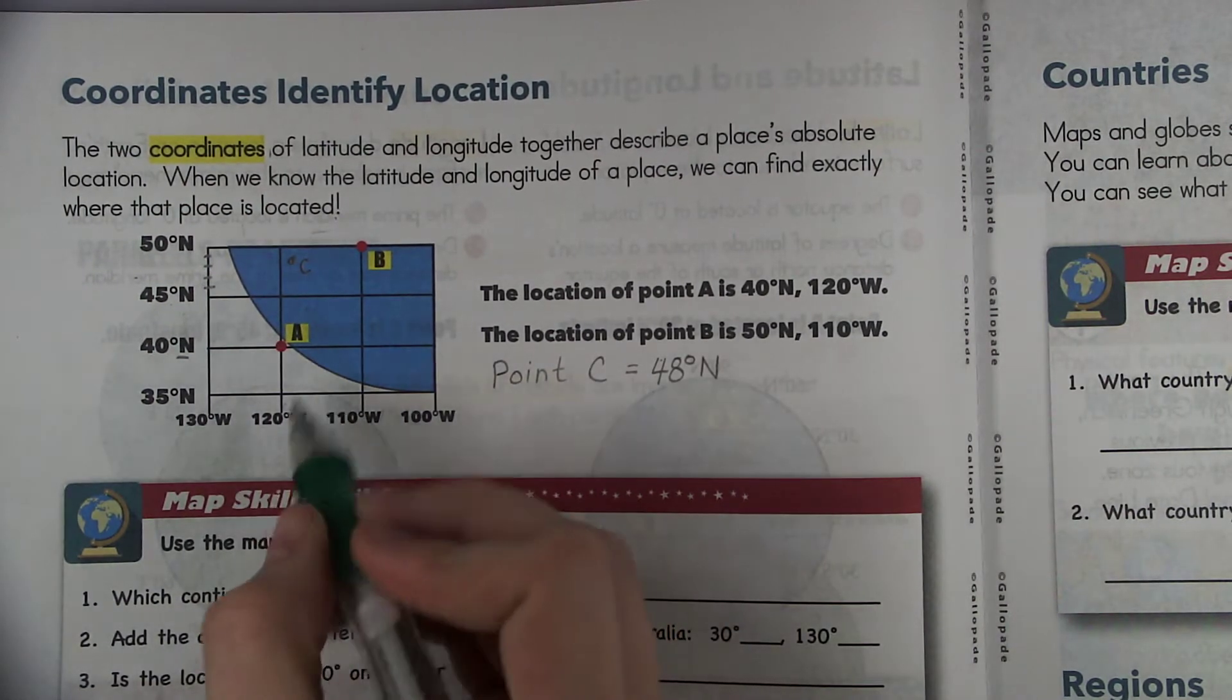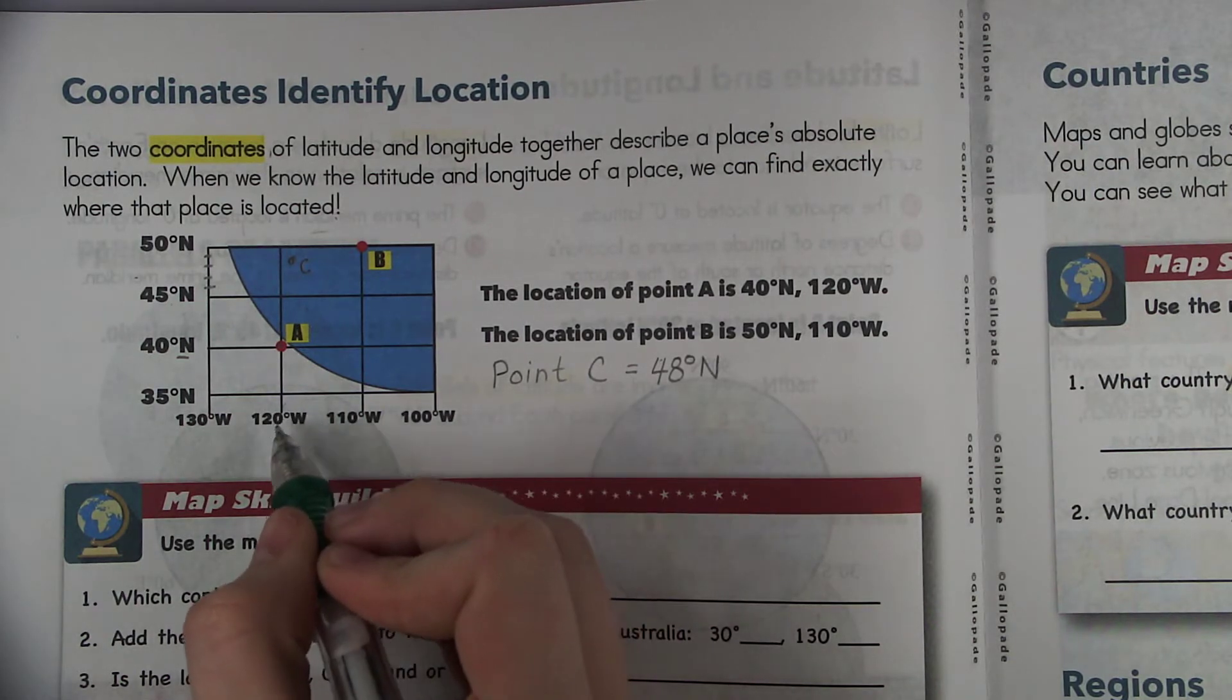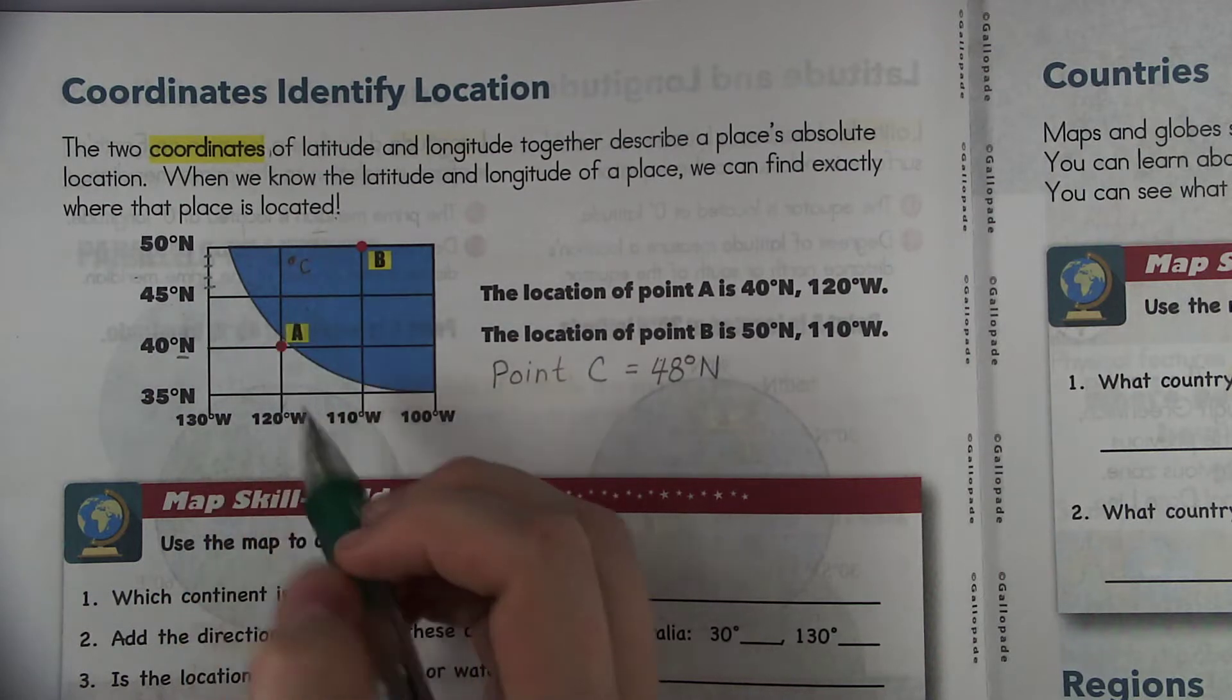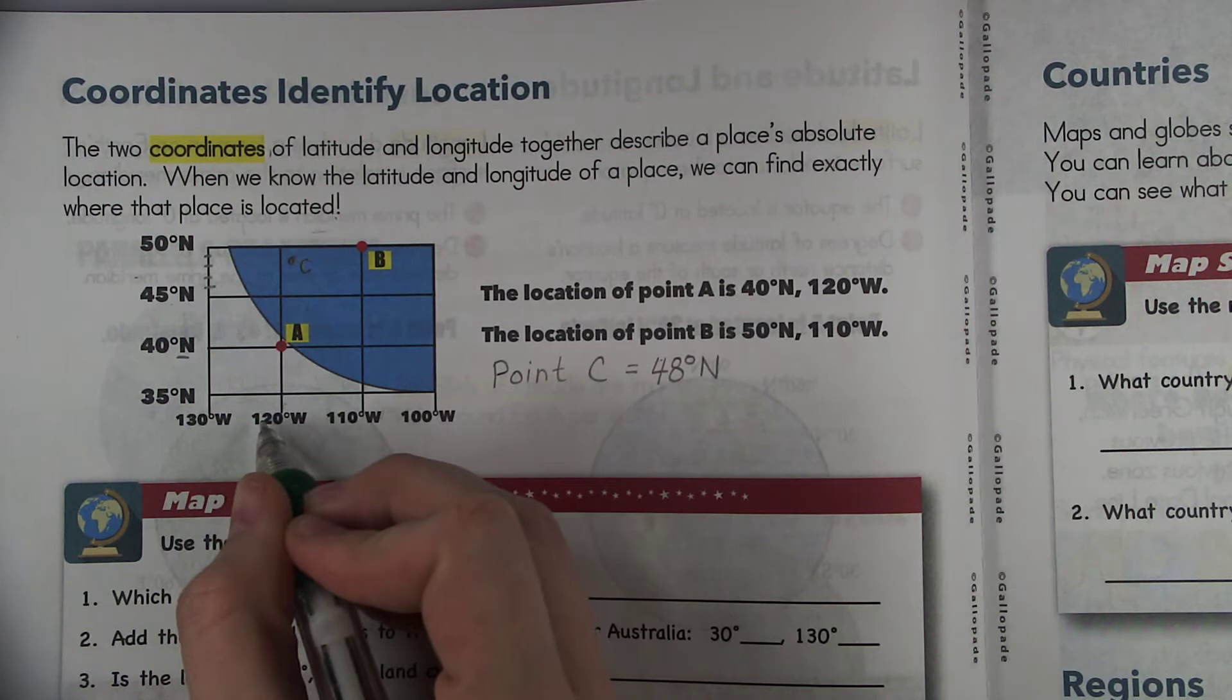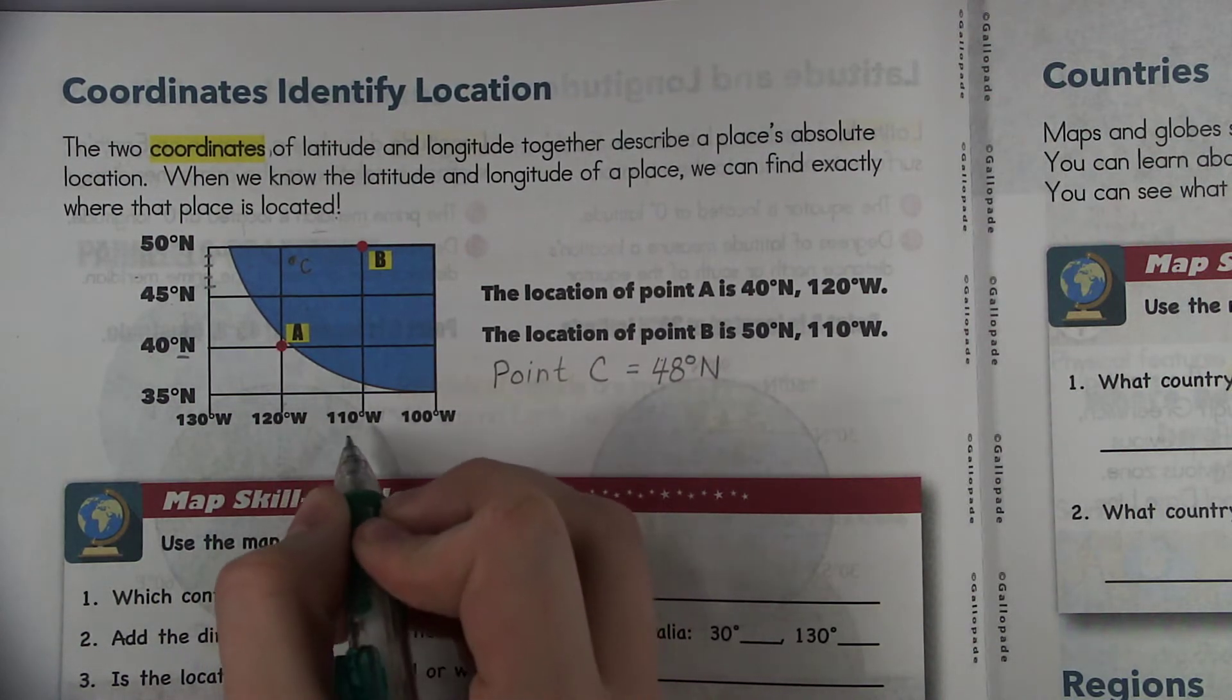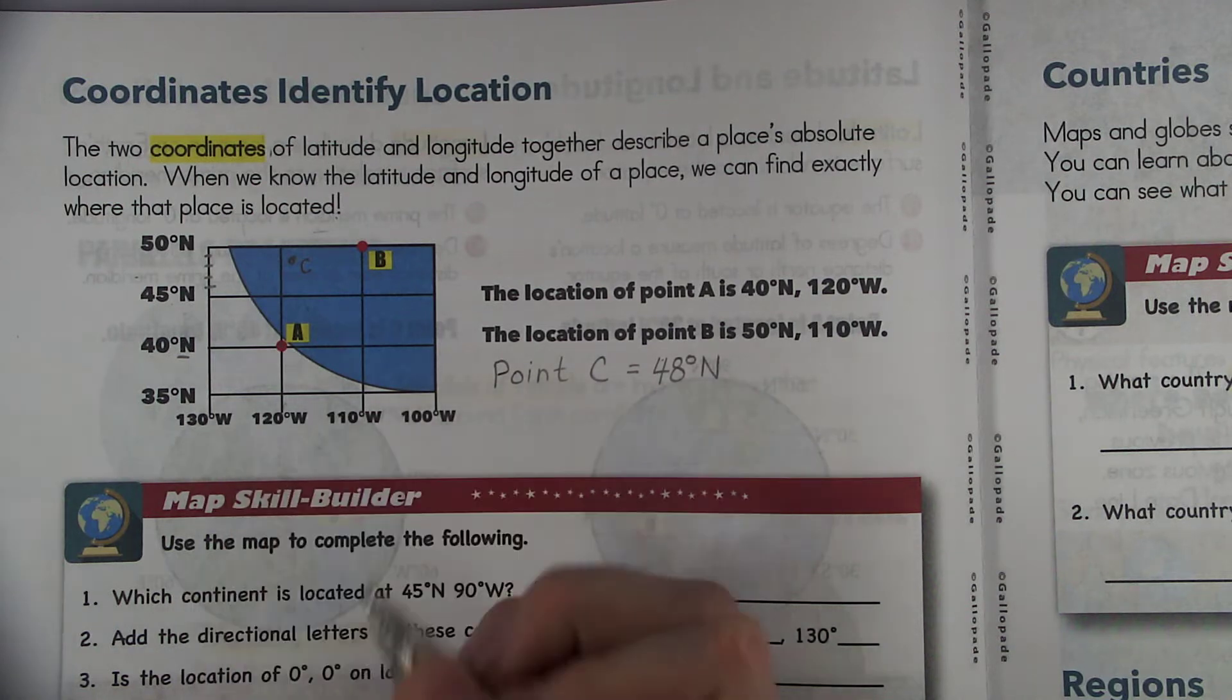And then if we look at west it's between 120 and 110. Well you would think okay 120, 121, 122 maybe, but no this is actually going backwards so I need to go from 110 to 120. So between 110 and 120 we have 111, 112, 113, etc. until you get to 120.